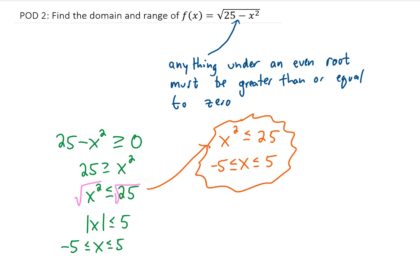One more way to look at this problem, if we started back here with 25 minus x squared is greater than or equal to 0, we could have thought of 25 minus x squared as a parabola that opens downwards and has its vertex all the way up here at 25.